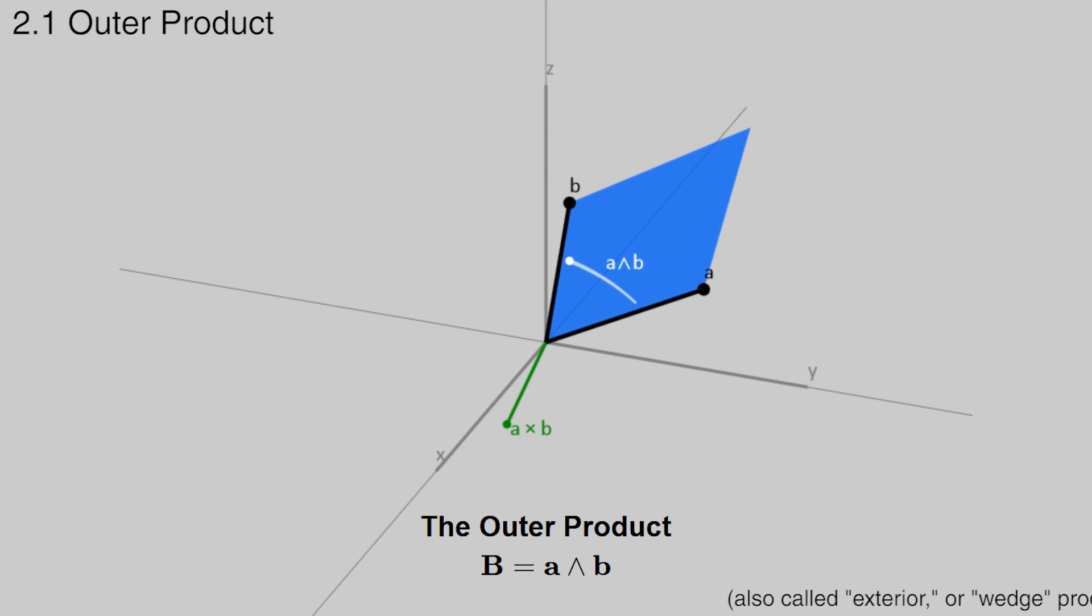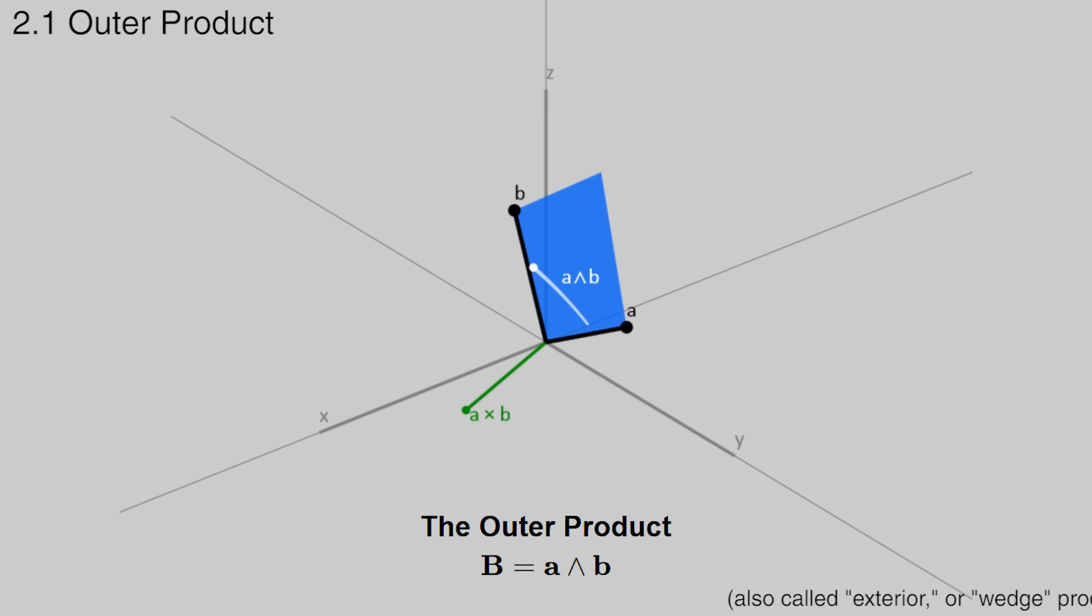The bivector b can be represented as the parallelogram built from the vectors a and b in the plane they form together. The idea of a bivector might seem strange at first, but they are pretty much as fundamental as vectors. If a vector is like a line, then the bivector is like a plane.